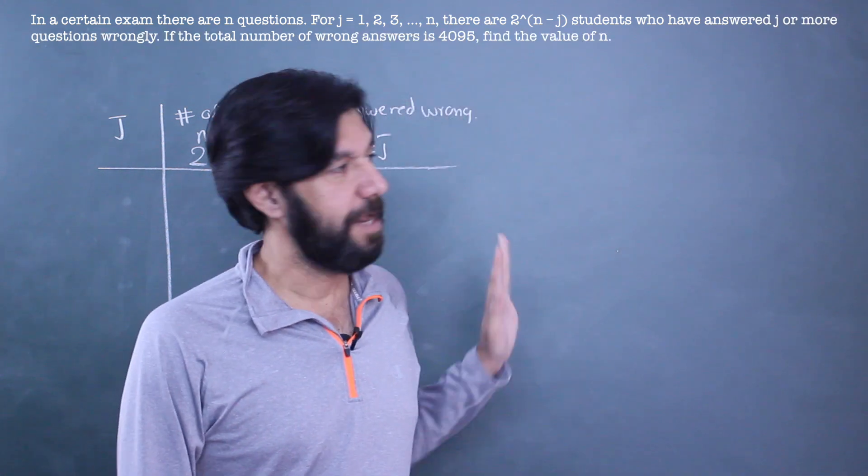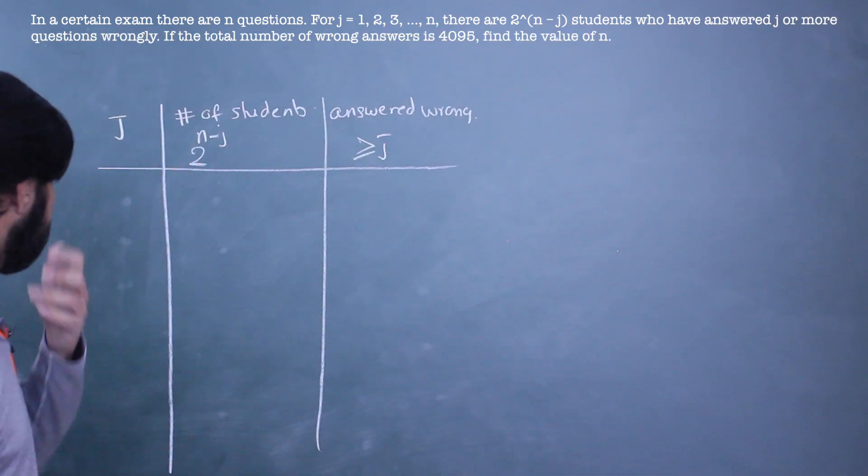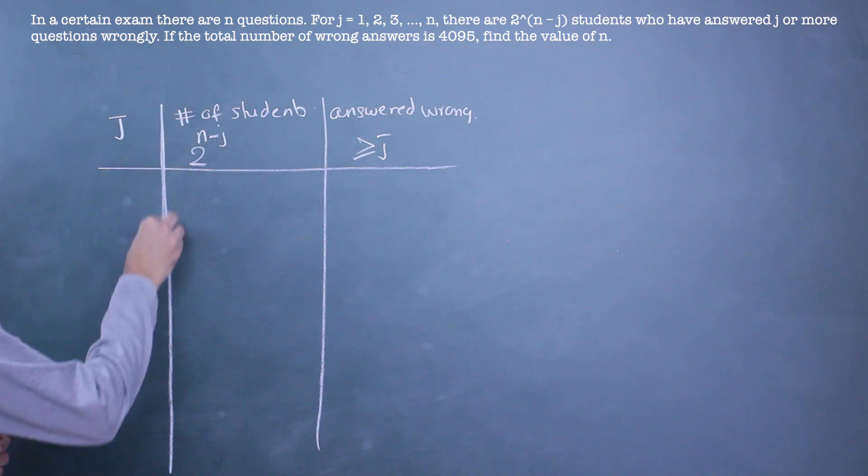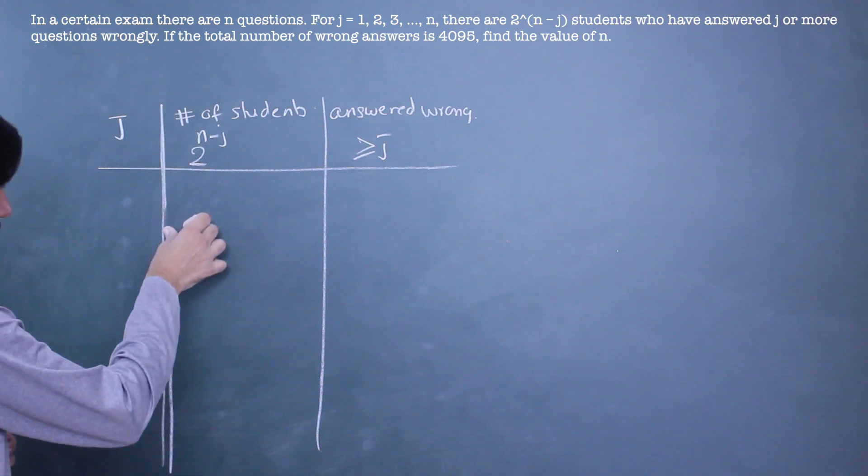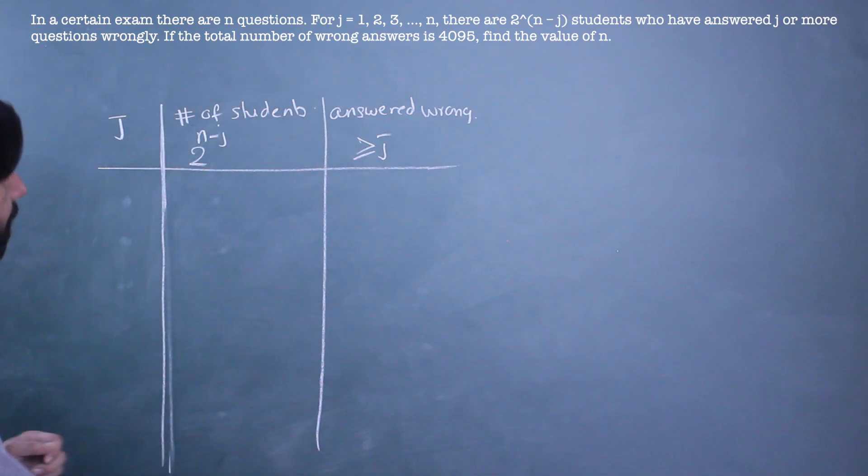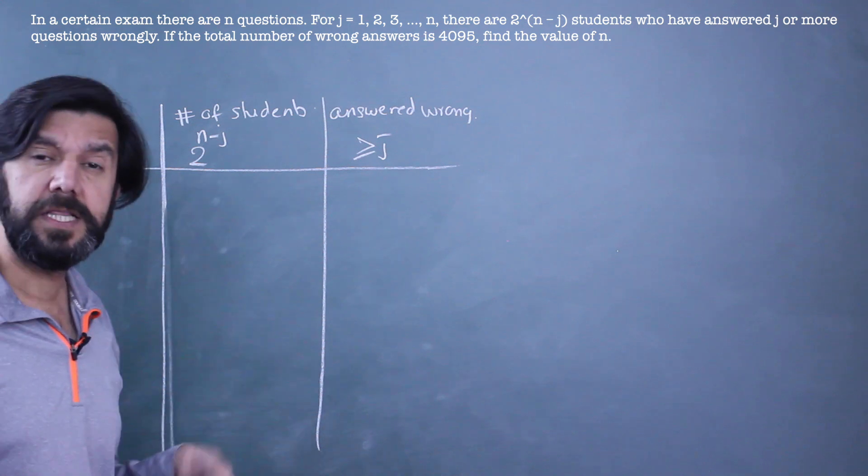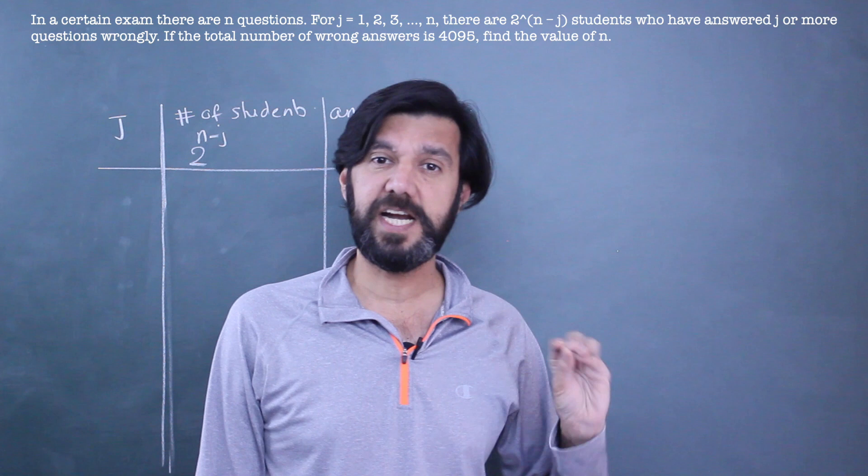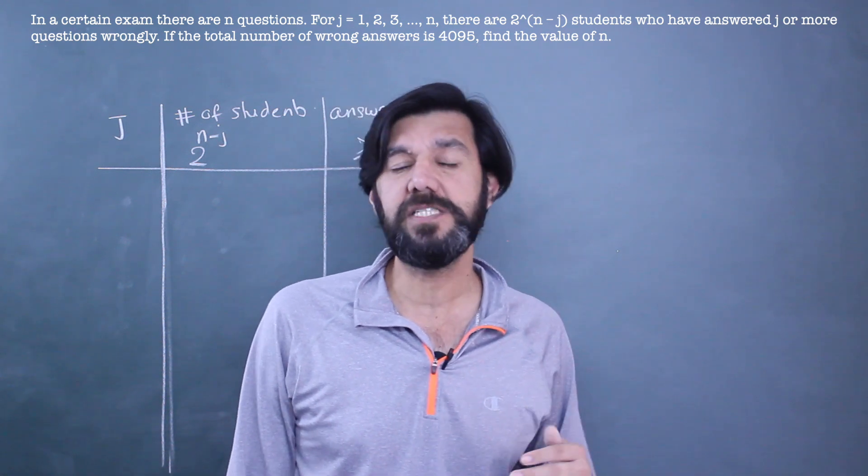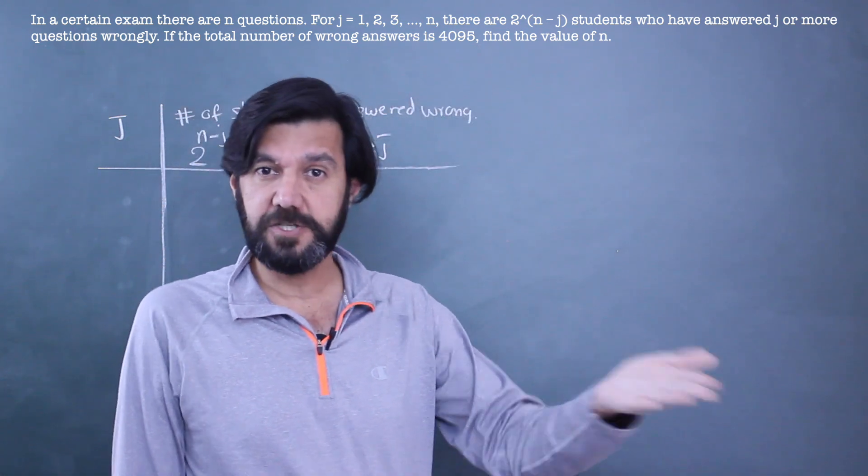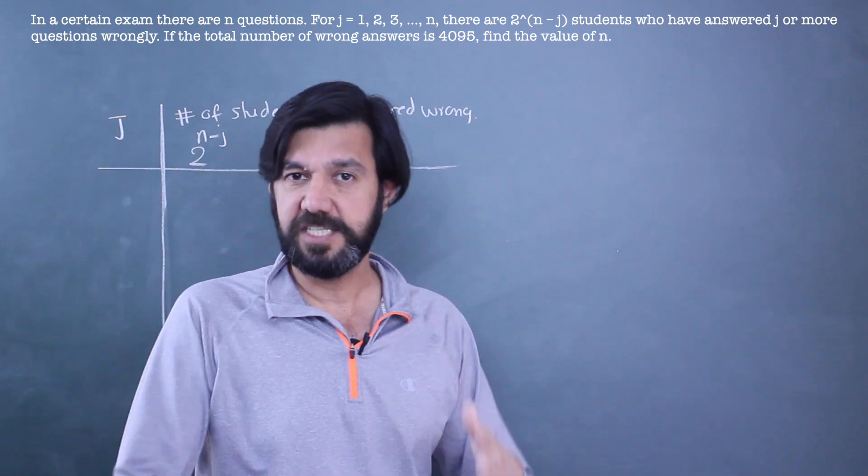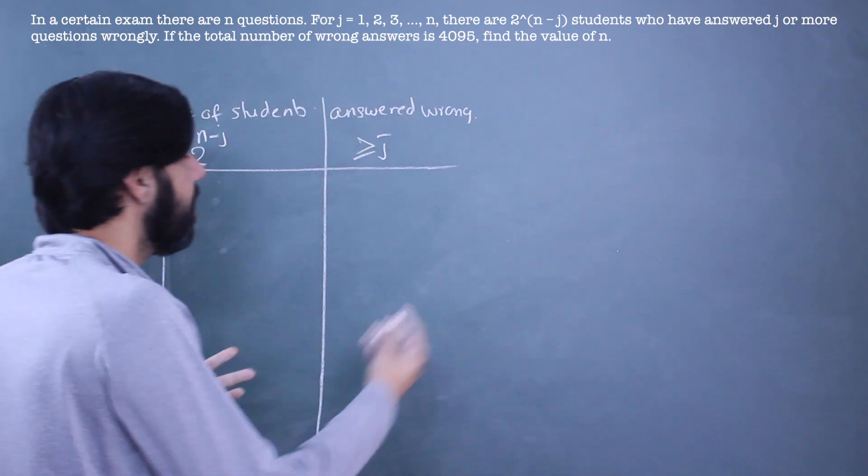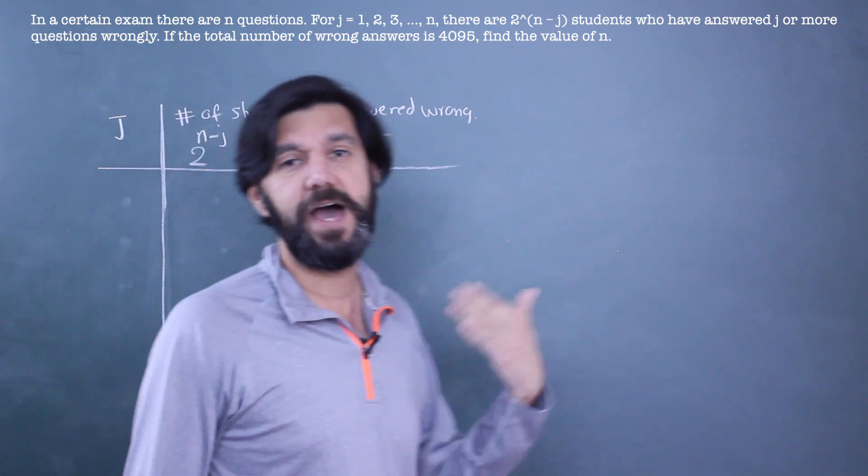This is a CAT question. Let me first solve it and then we'll talk about the topic. Working with questions when there are a lot of n and j and k or a lot of variables tends to get a little difficult, and with 2^(n-j) it's really going to be difficult. So a simple way is let's assume a value.